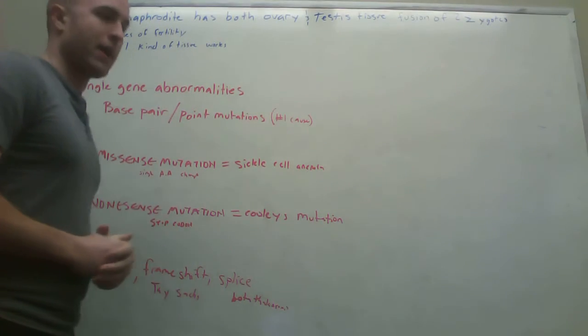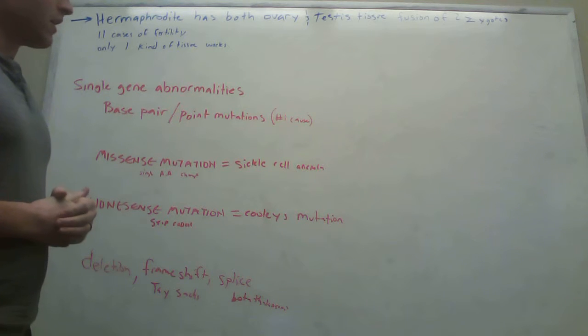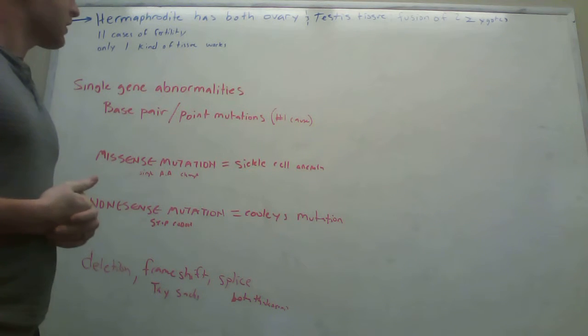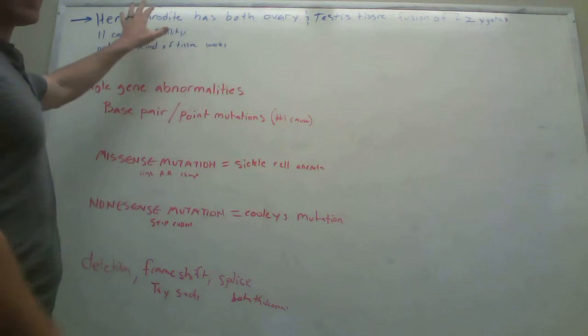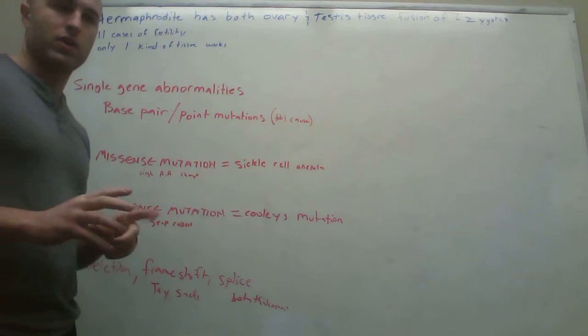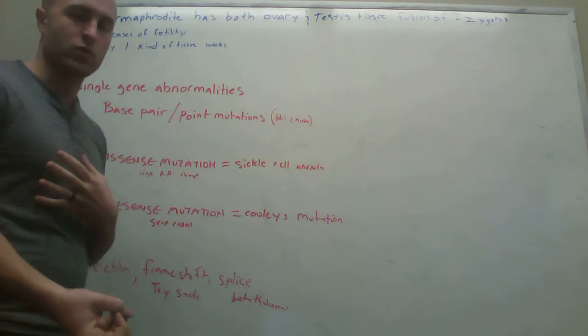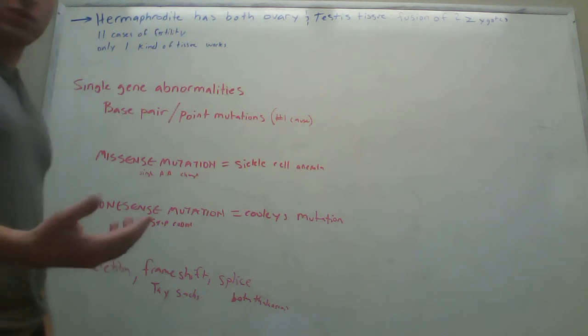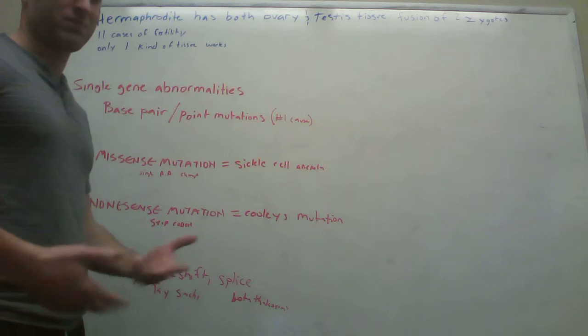This is the third part of Biochemistry Lecture 2, which is talking about chromosome disorders. First, finishing up the last bit of the sex genes, a true hermaphrodite is one that has both ovary and testi tissue, and it's typically the fusion of two zygotes. There's been 11 cases of actual fertility from this. Usually only one of the two kinds of tissue works, so the testes or the ovaries work, even though they have both. That probably has to do with whether they have testosterone or estrogen dominant.